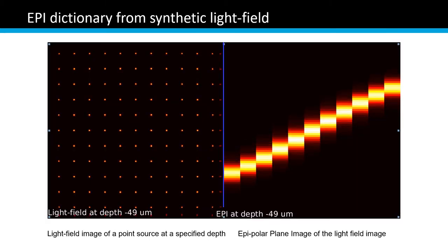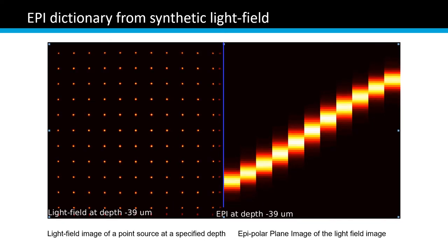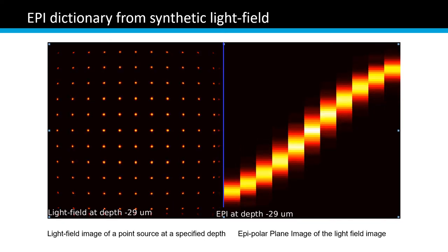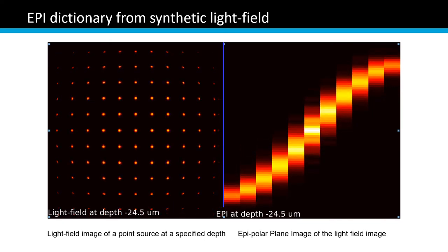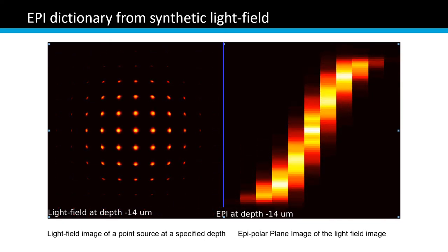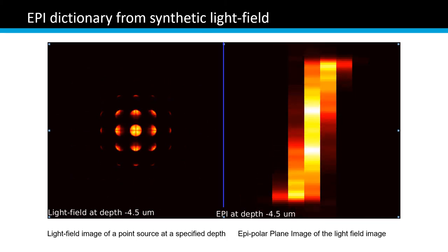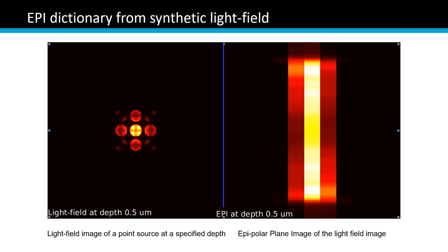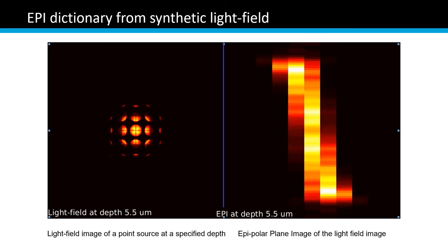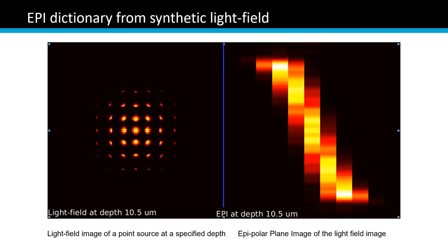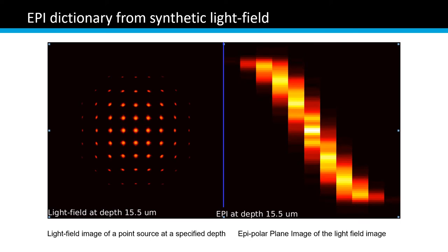This animation demonstrates how the light field and epi change along the depth. You can find that along with the increase of depth, the slope of the line in the epi also increases.